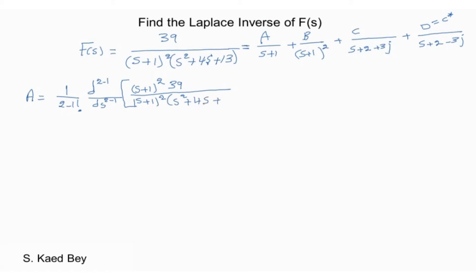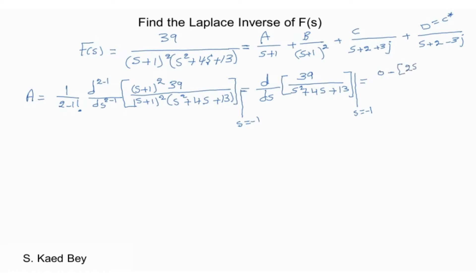On the other hand, coefficient A can be found using differentiation. Since the denominator of coefficient A is only one order less than the maximum repeated order, which is 2 in our case here, coefficient A can be found by applying the first order derivative to the expression used to find coefficient B.